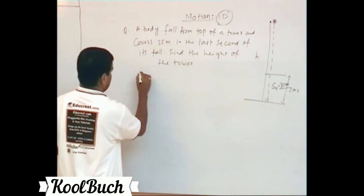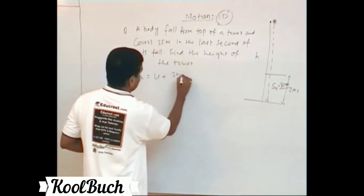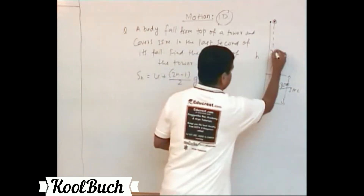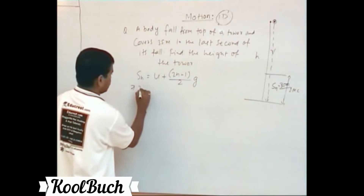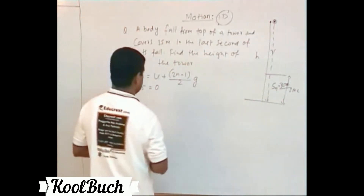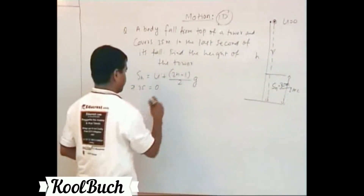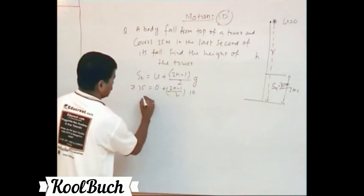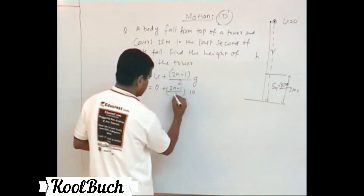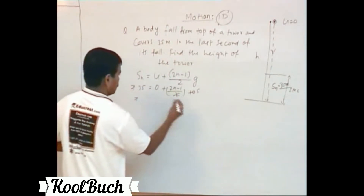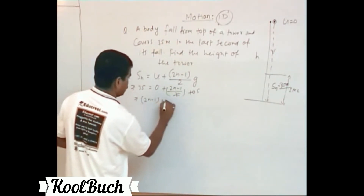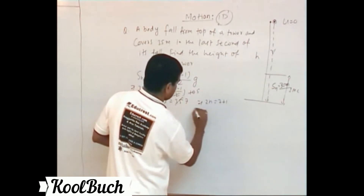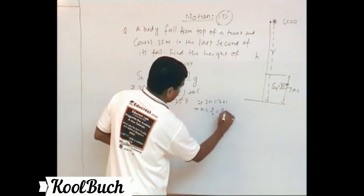We use the formula: s-n equals u plus (2n minus 1) divided by 2 times g. Here g is positive because the object is falling downward. Substituting: s-n is 35, initial velocity u is 0, so 35 equals (2n minus 1) divided by 2 times 10. Simplifying: 2n minus 1 times 5 equals 35, so 2n minus 1 equals 7, therefore 2n equals 8, and n equals 4 seconds.